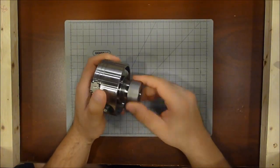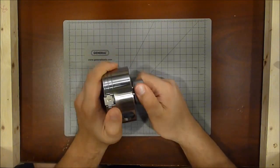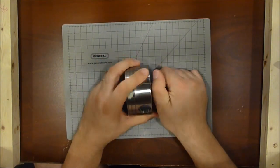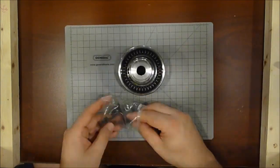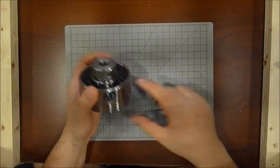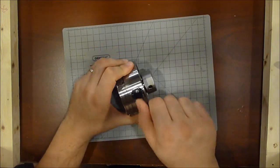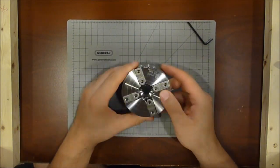The spindle insert is screwed into the chuck. The spindle is secured by one impossibly small grub screw, otherwise known as a set screw.